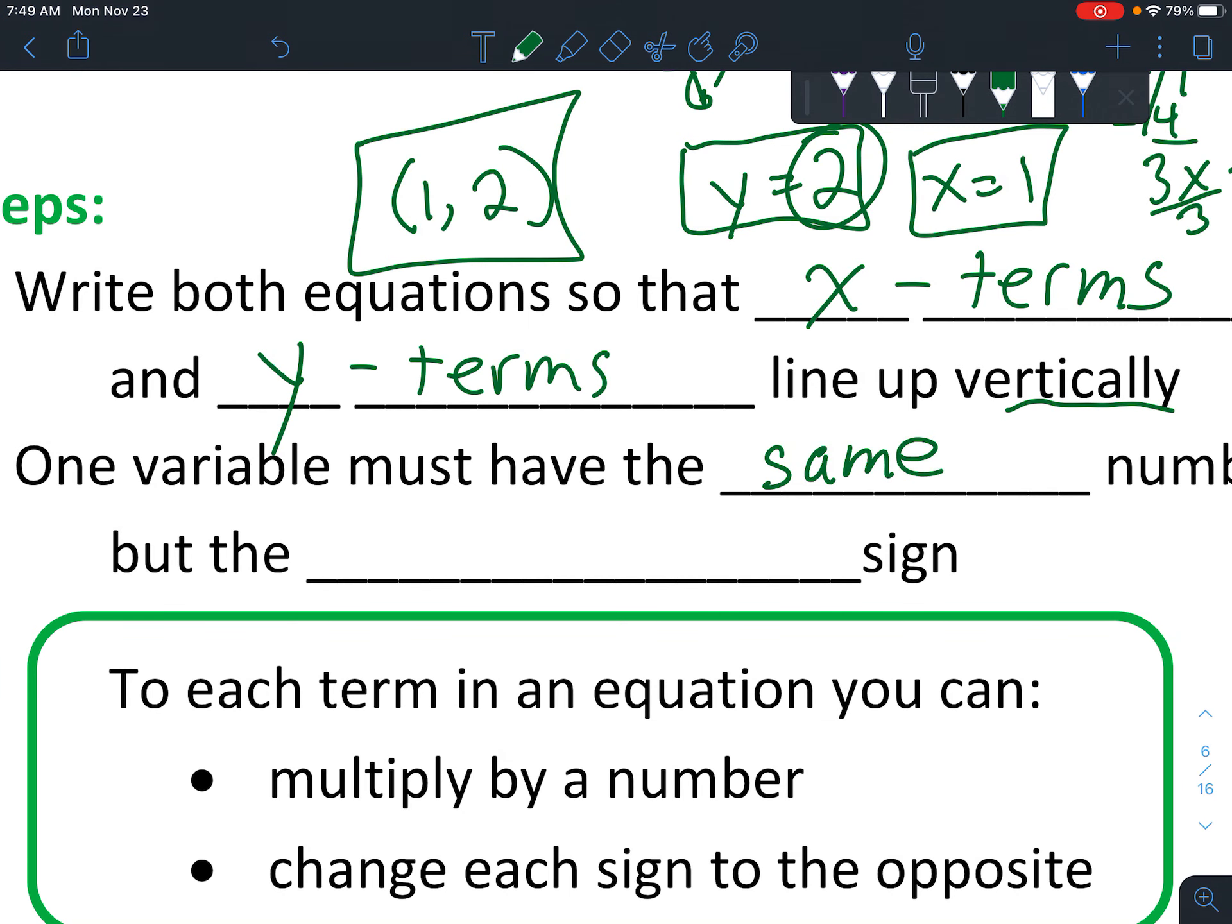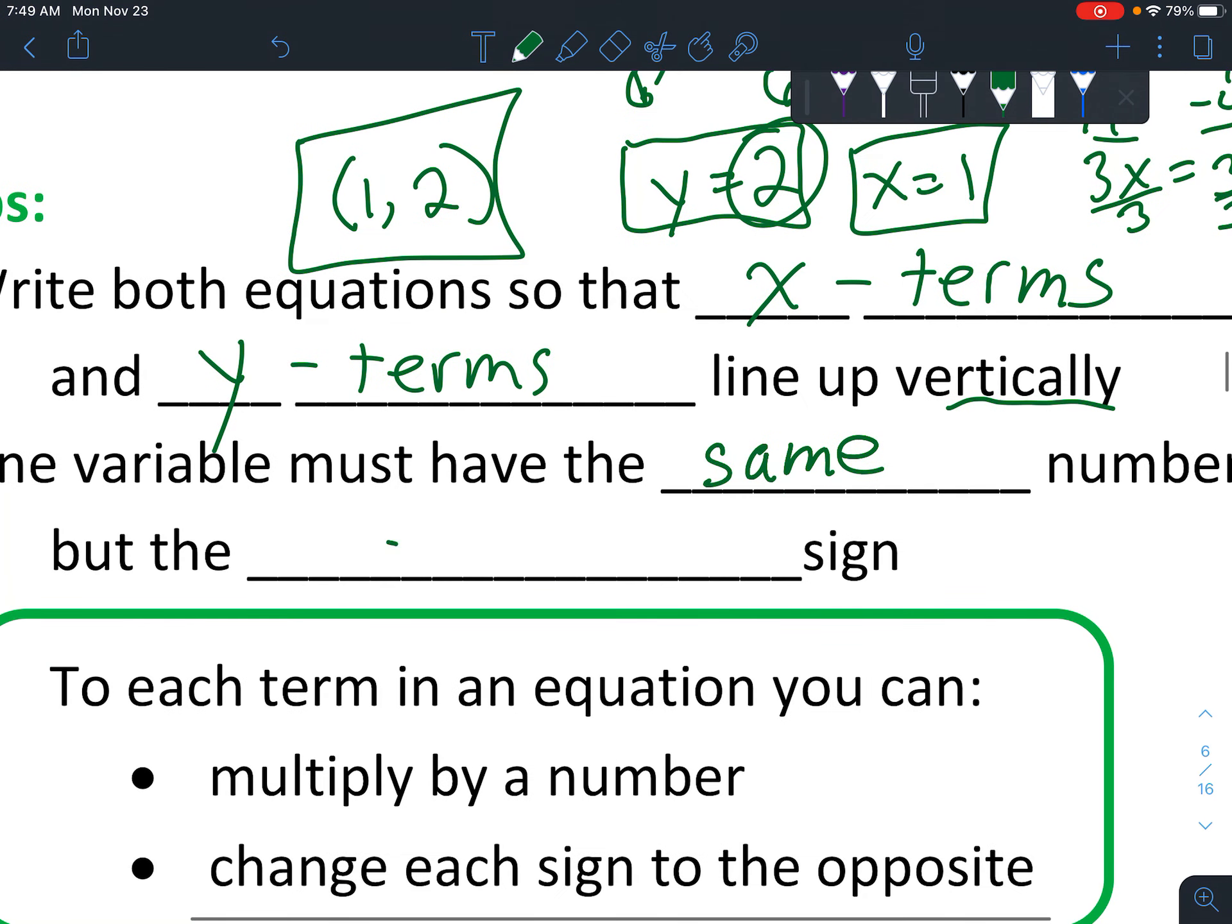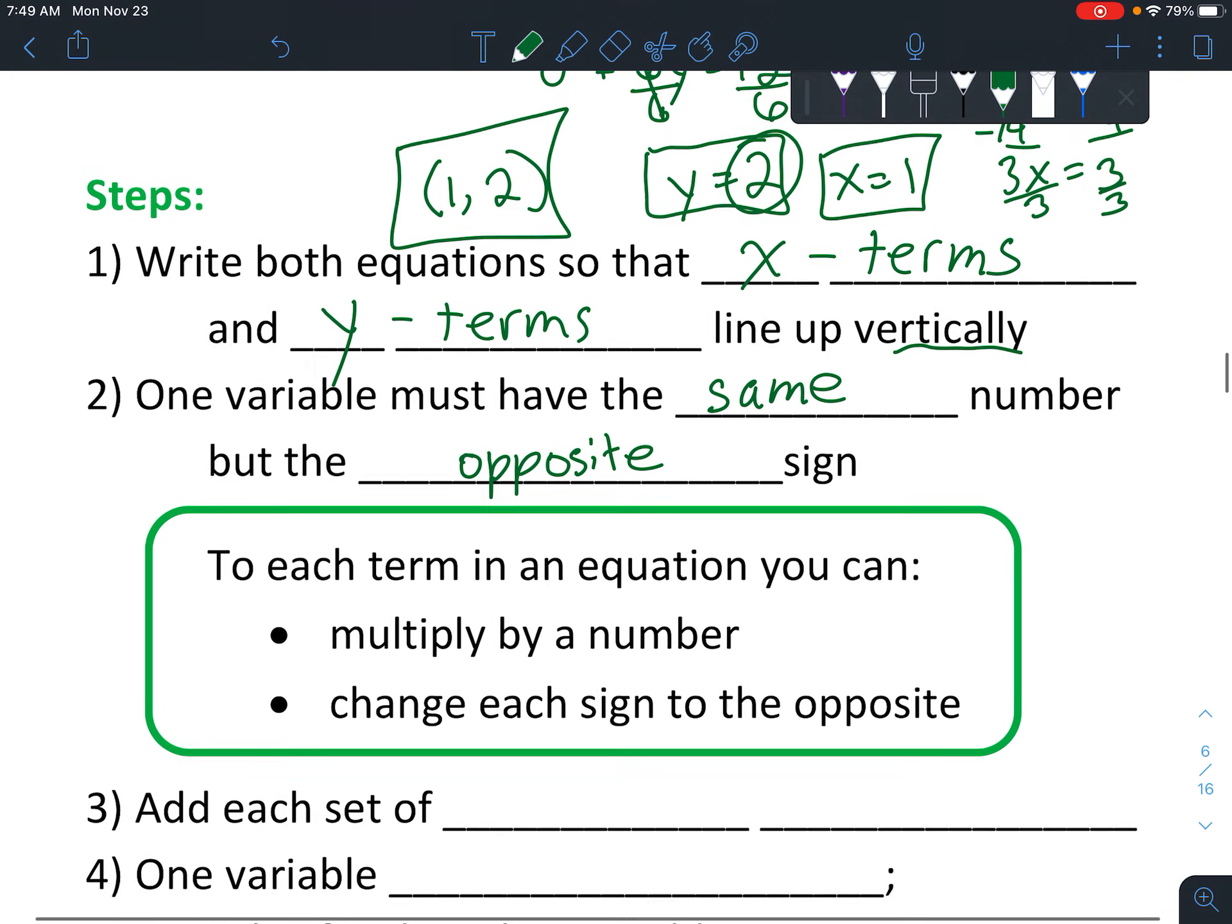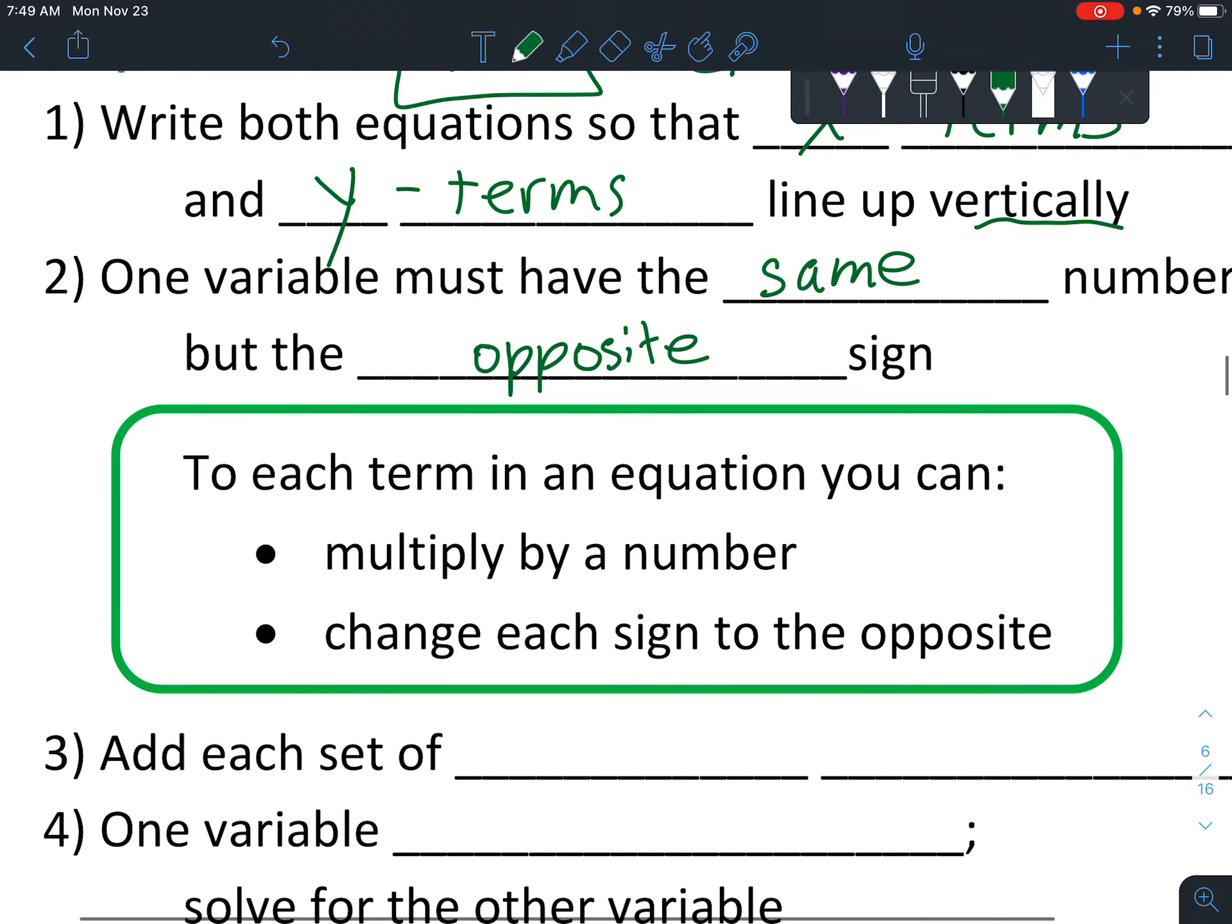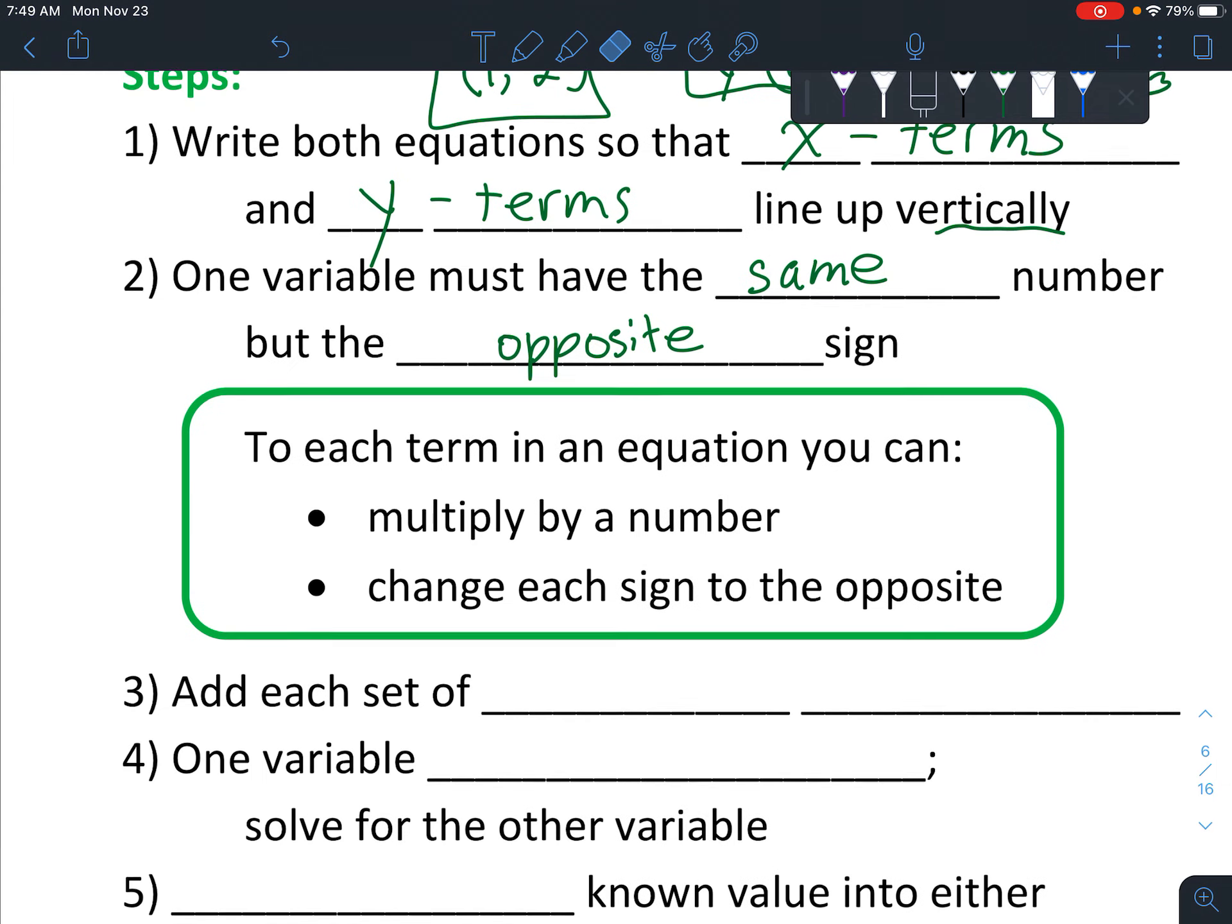One variable must have the same number, but the opposite sign. That's the only way that they're going to disappear, essentially. And in order to get that to happen, this is kind of a key point here. That's why it's in a green box. So to each term in an equation, you can multiply by a number, and you can also change each sign to the opposite. What you're doing there is essentially multiplying everything by negative 1.